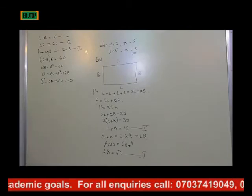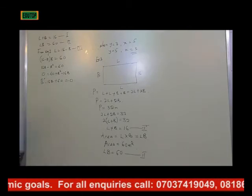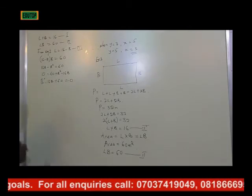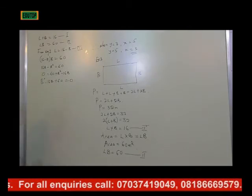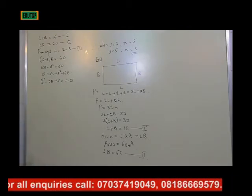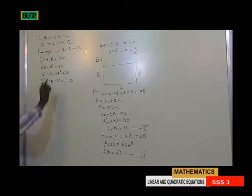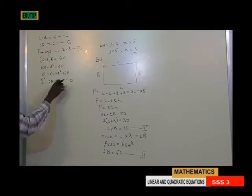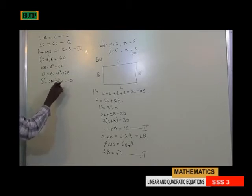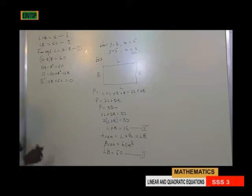This is a quadratic equation which we want to resolve using the factorization method. By using factorization, we are going to look for two factors of 60 whose product gives us plus 60 and whose sum or difference gives us minus 16.